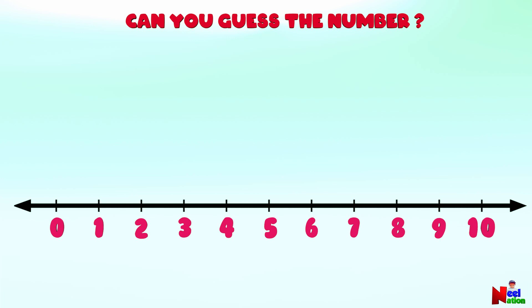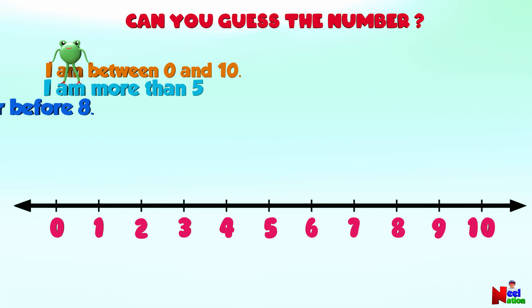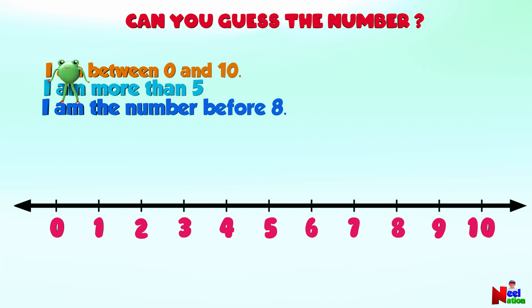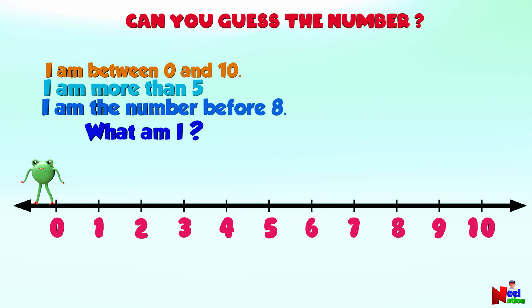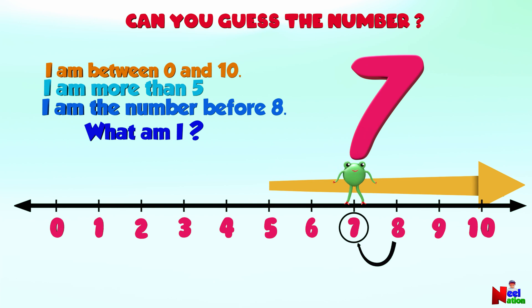I have some clues for you — can you guess the number? Yes, I can do it! I am between zero and ten. I am more than five. I am the number before eight. What am I? Let's look at the clues one more time: between zero and ten, more than five, the number before eight. Number seven! Yes, that is number seven — you got it!